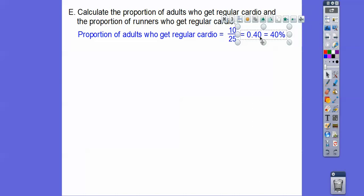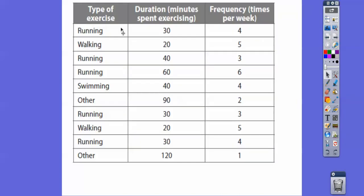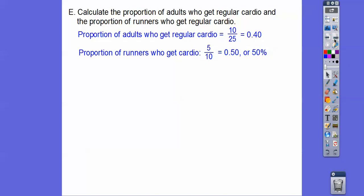All right. So it said calculate the proportion of runners who get regular cardio exercise. Well, of the cardio people, there's 10 of them that said they do. And so how many were runners? So here's a runner, one, two, three, four, there's five runners of these 10. So of the people who get cardio, it's five out of 10. So 50%. Or 0.50.